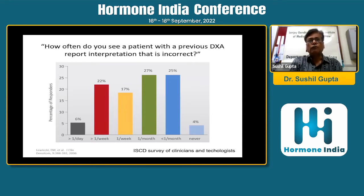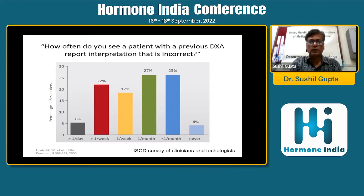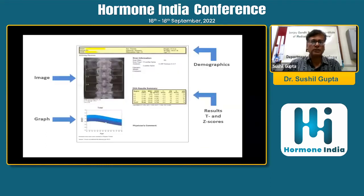The important issue is how often these errors happen. A survey by the International Society of Clinical Densitometry asked clinicians and technologists how often they see a patient with a previous DEXA report that is incorrect. About 6% of clinicians and technologists see at least one wrong report per day. Looking at broader categories — more than one per week, one per month, less than one per month — almost 70 to 27% of technologists and clinicians observe some error in DEXA scan analysis. So it is not uncommon.